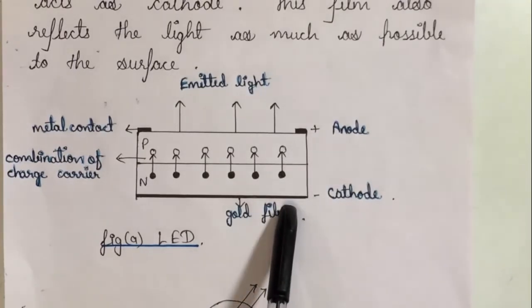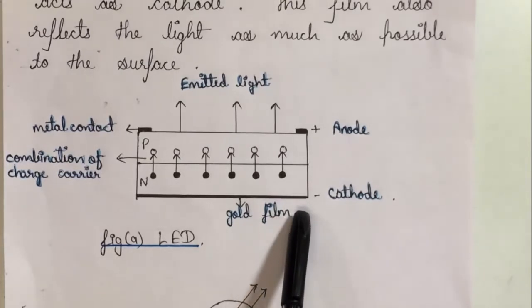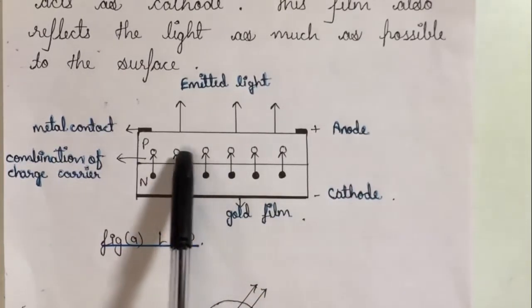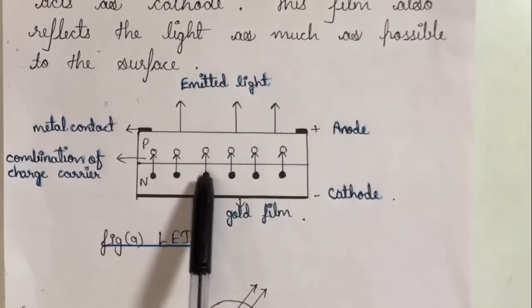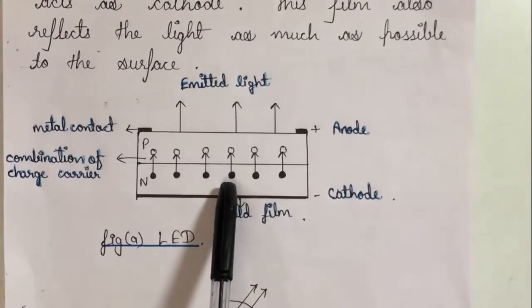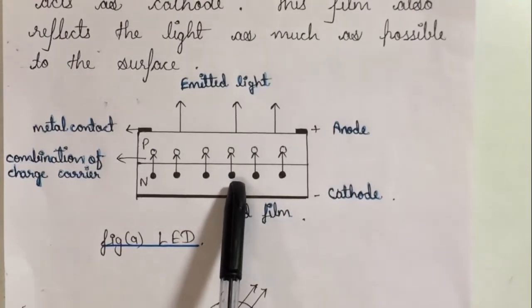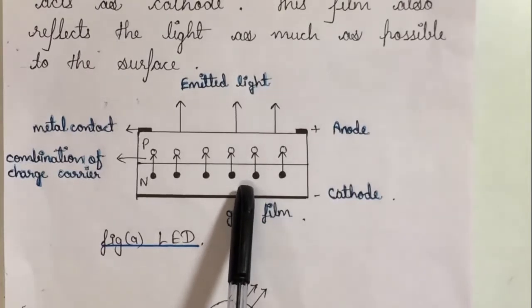When the PN junction is forward biased, the holes from P region and the electrons from N region recombine through the conduction band. The conduction band is formed for emitting the light energy in the form of photons. This whole phenomenon is called electroluminescence phenomenon.